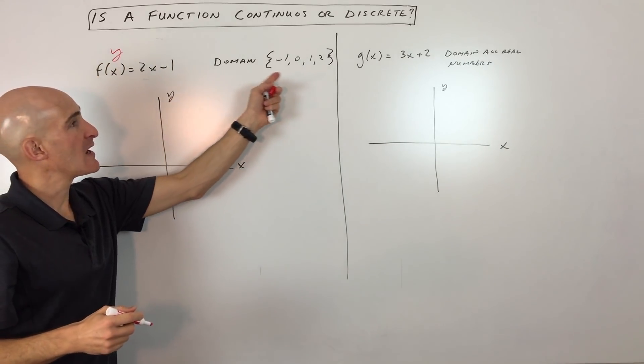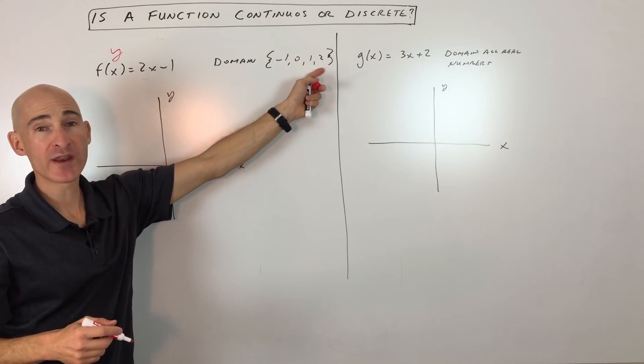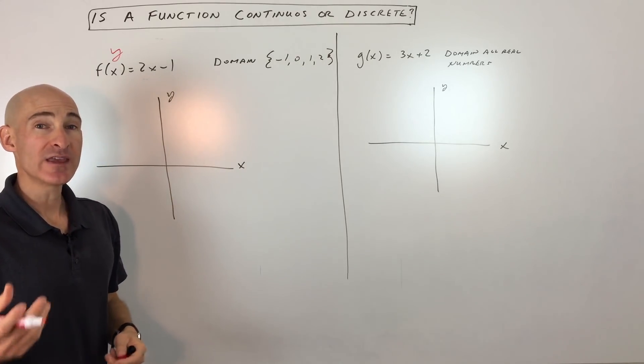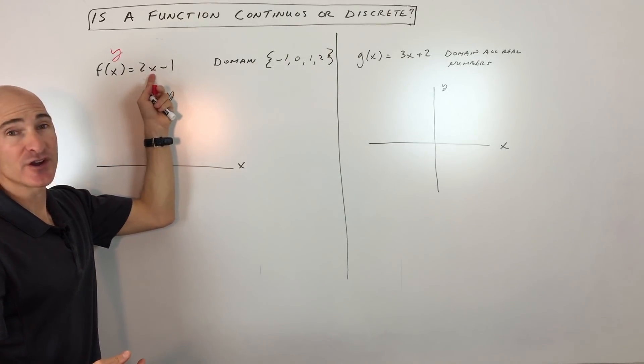But you see how the domain is listed here, negative 1, 0, 1, and 2? The domains are the inputs. Those are the x values. That's what you're putting into your function.